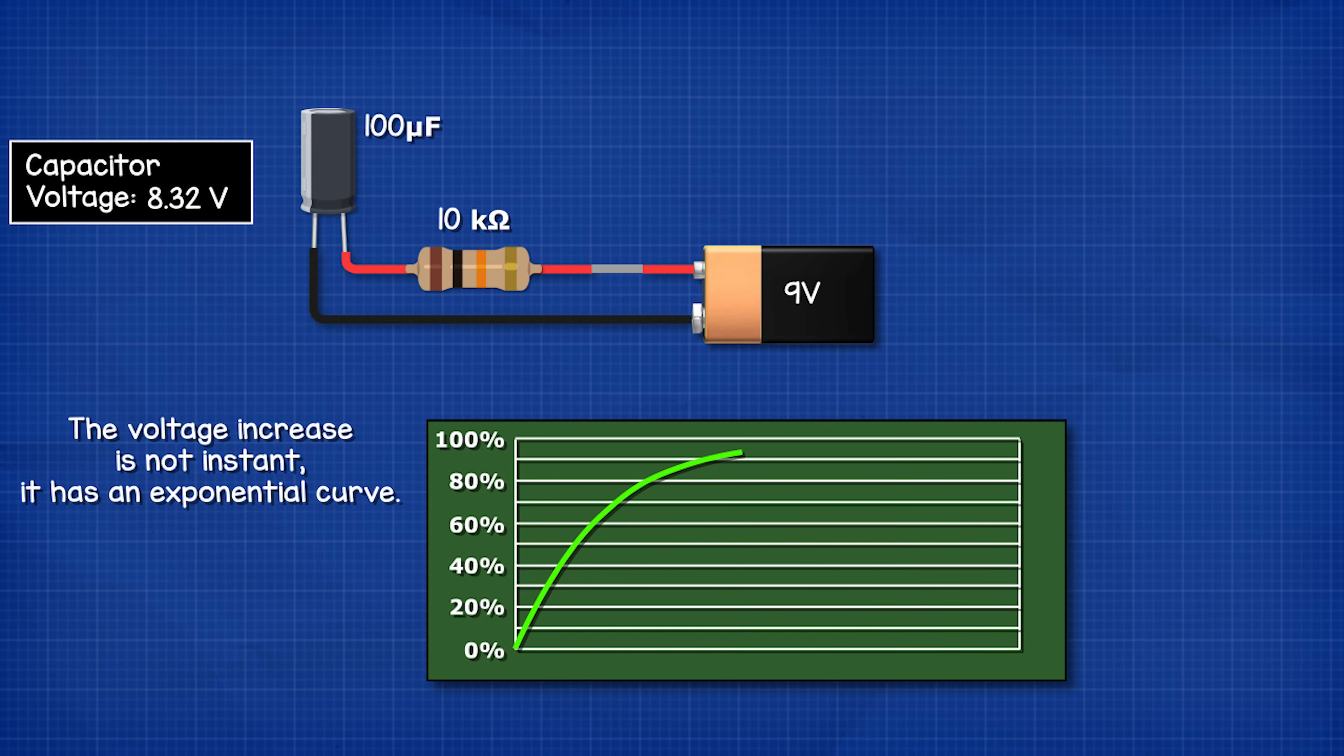At first the voltage increases rapidly and then it slows down until it reaches the same voltage level as the battery.